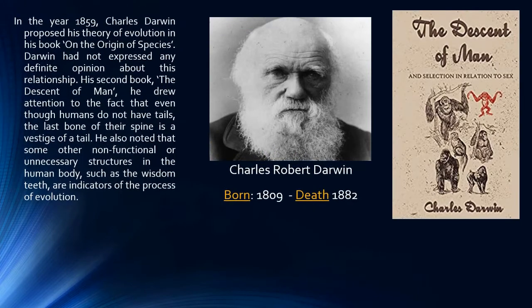The first scientist who gave us a systematic explanation of the concept of evolution was Charles Robert Darwin. In the year 1859, Charles Darwin proposed his theory of evolution in his book, On the Origins of Species. Darwin had not expressed any definite opinion about this relationship.